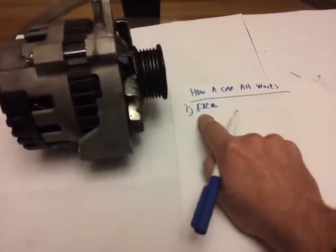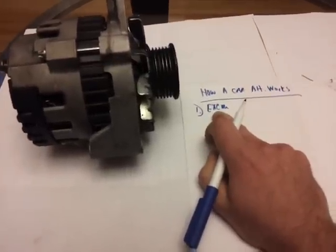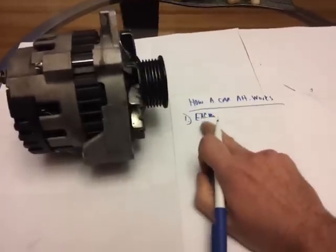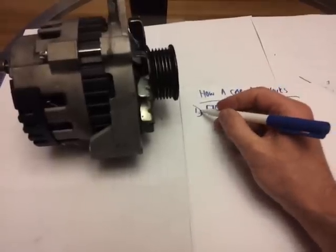This exciter wire also acts like a warning light. In other words, when you're driving down the street and you see a battery light go on because the alternator is bad, this does that too. It's connecting to your dash. So that's the first wire.